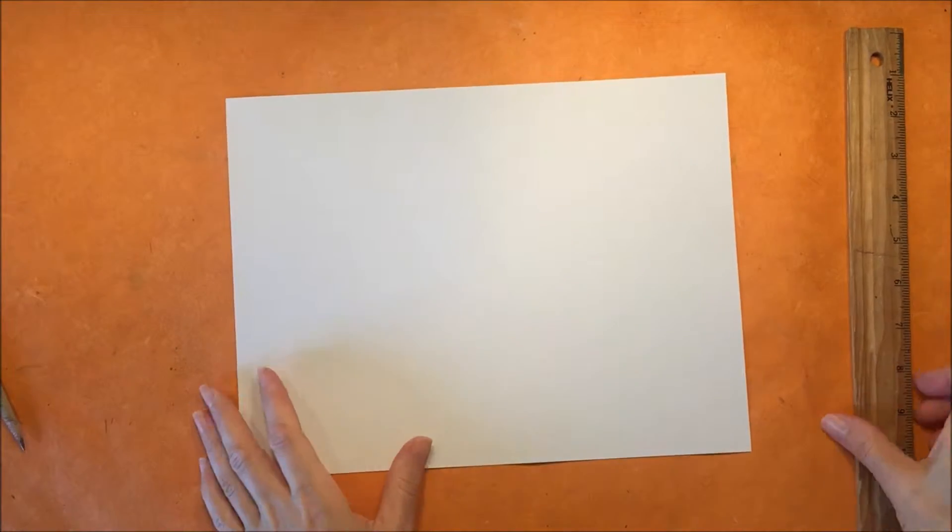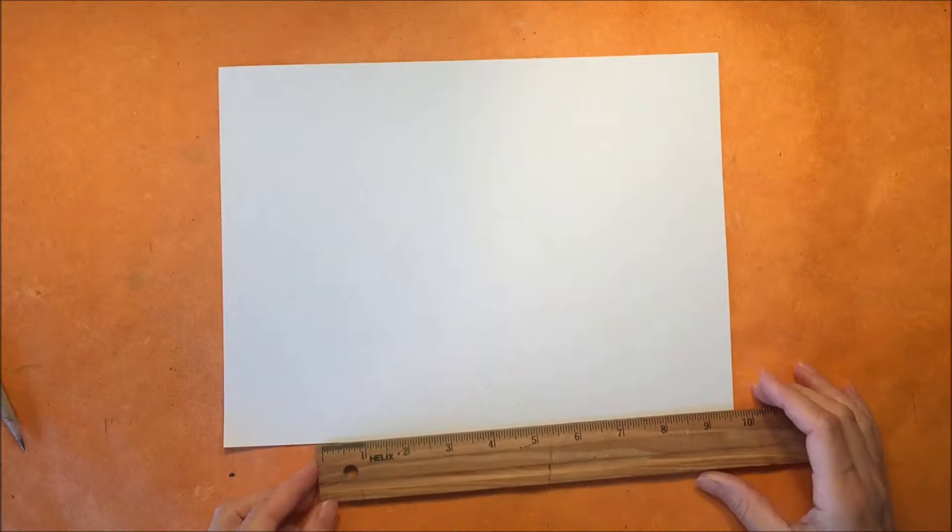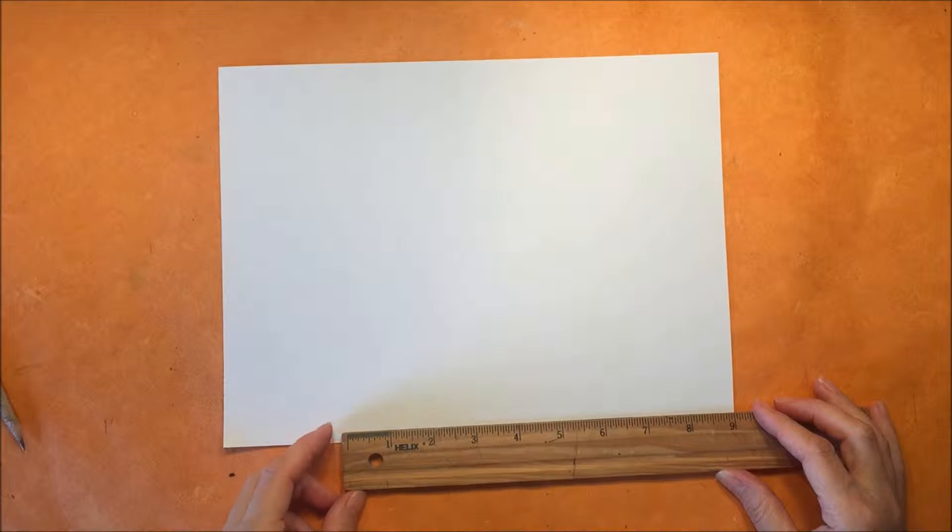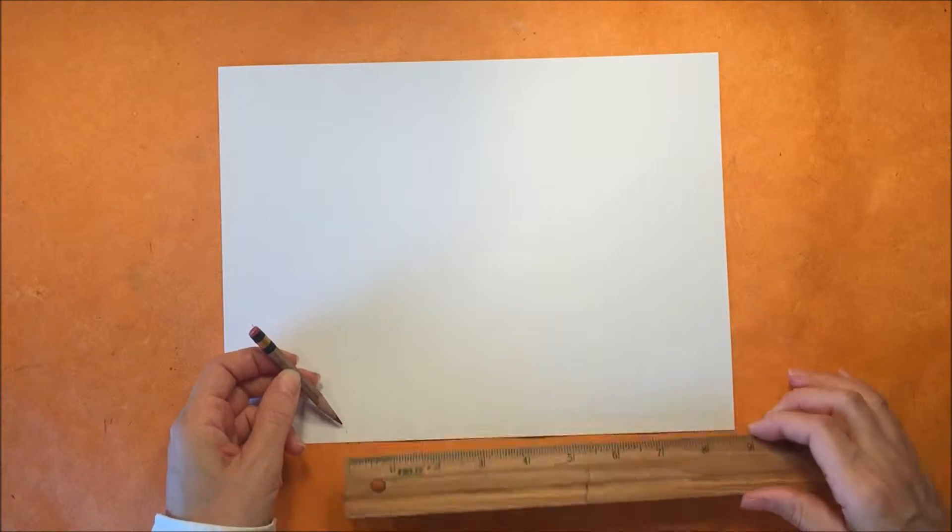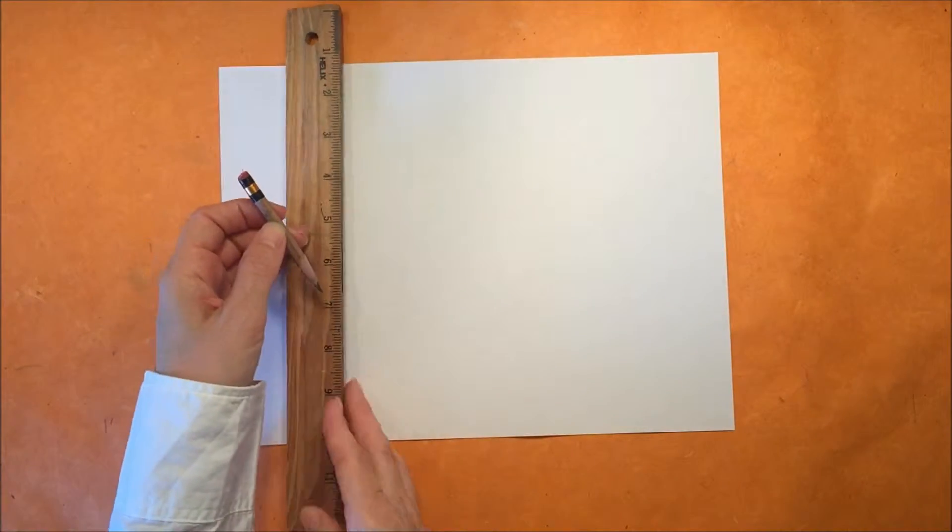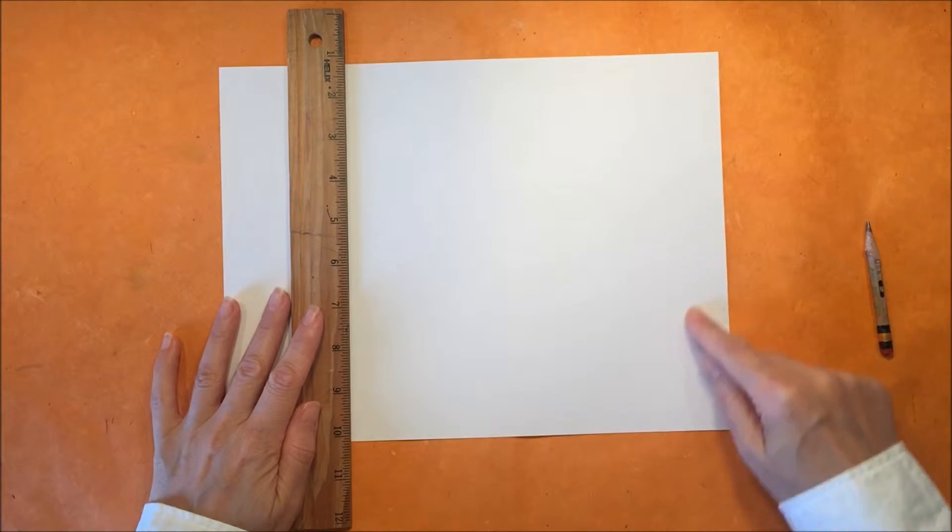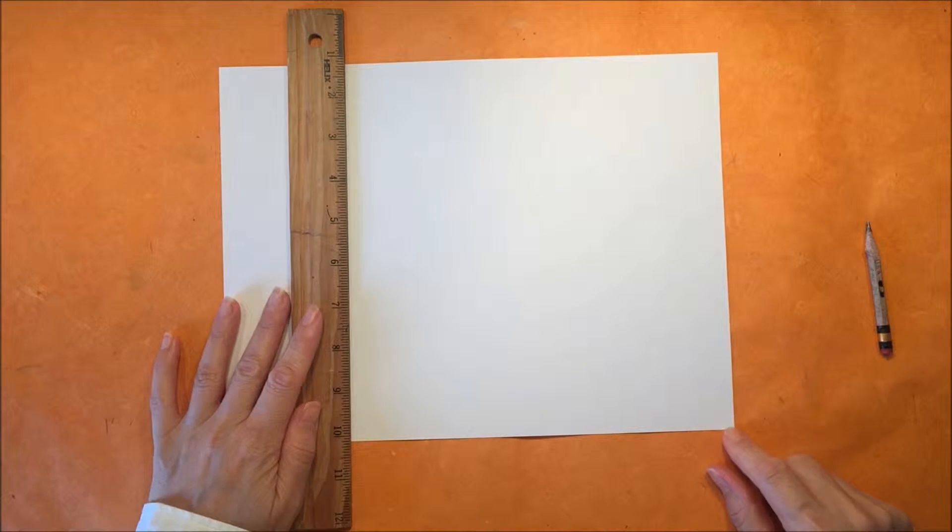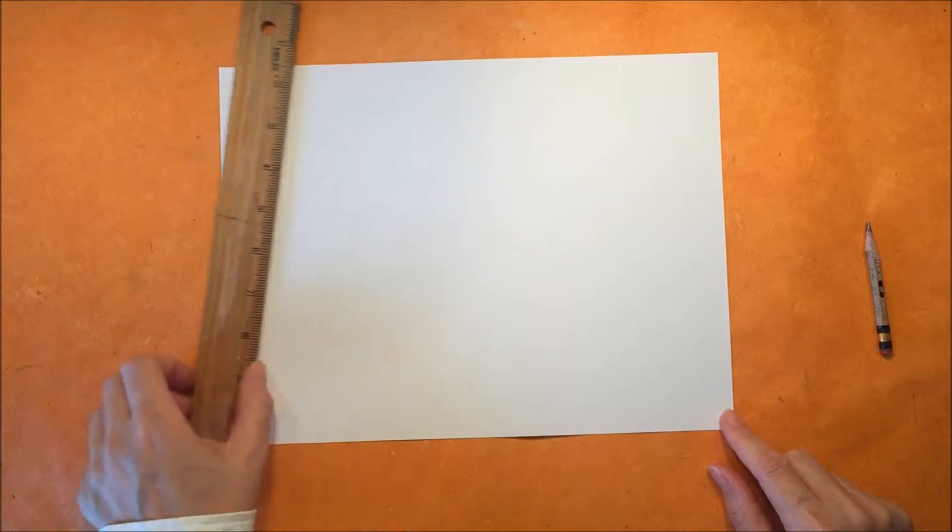We could just cut down this sheet of paper which is 9 inches by 12 inches and form a square by measuring off 9 inches on the side and 9 inches at the top, then drawing a line from top to bottom, and then we could cut it out. That way we would have a square because we already have the corners at 90 degrees.